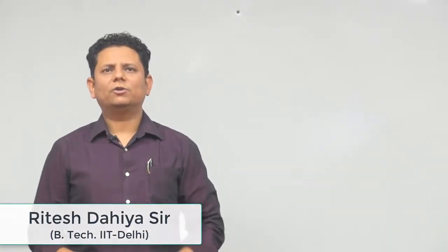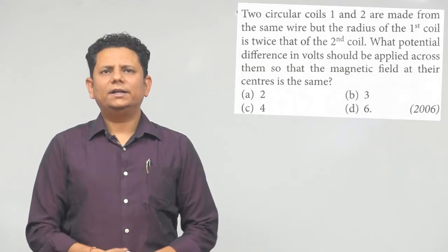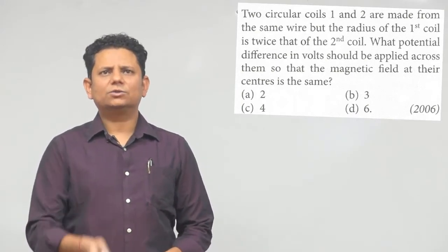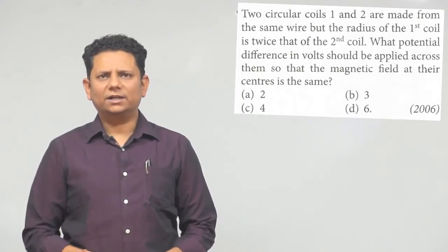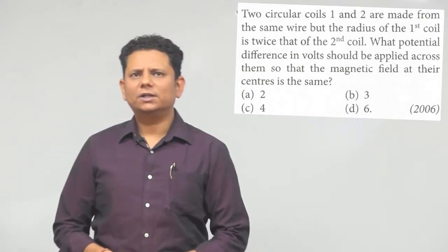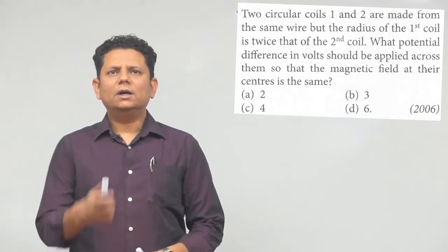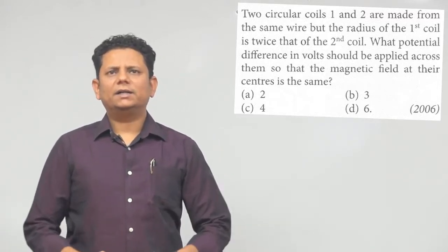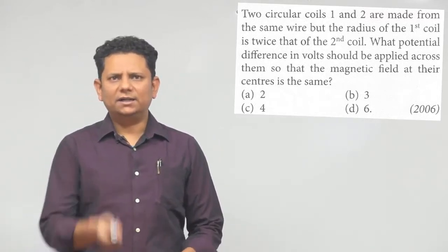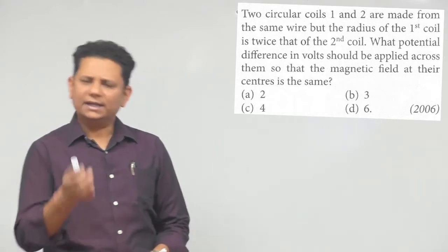Next question: two circular coils one and two are made from the same wire, but the radius of the first coil is twice that of the second coil. What potential difference in volts should be applied across them so that the magnetic field at the center is the same? Options are 2, 3, 4, or 6.